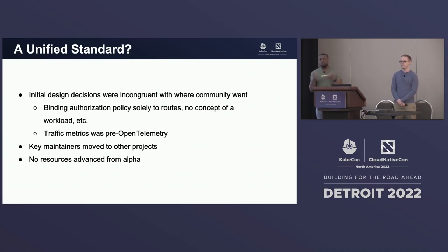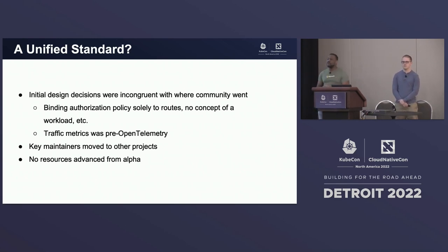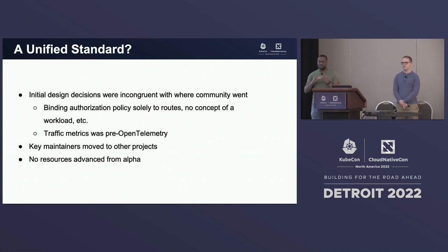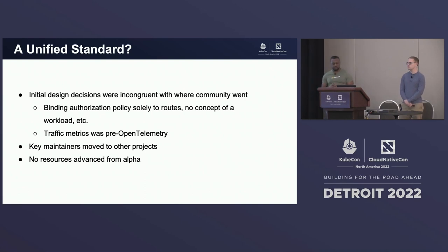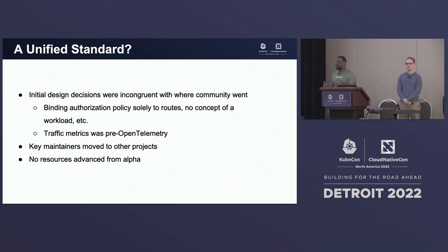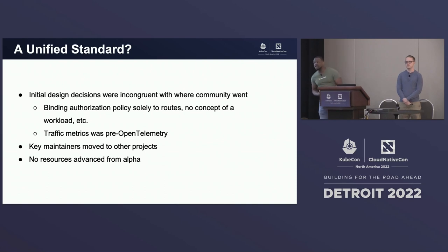The authorization policy binding was very route and service account focused — there was no space to insert workload selectors, and no concept of a workload in general within the SMI spec. There was a part of the SMI spec aiming toward unifying traffic metrics, but about six months after that spec was introduced, OpenTelemetry became a thing, and we weren't ready for that. We also had key maintainers move on and struggled to gain widespread adoption to move resources from alpha to beta. Today we're evaluating the future of the SMI spec — if you use SMI and have opinions, come talk to us.